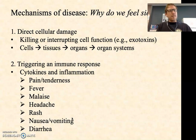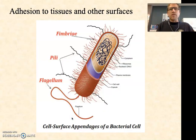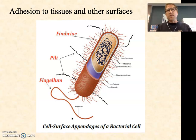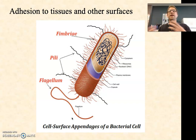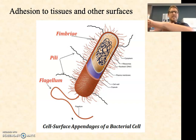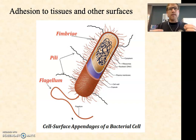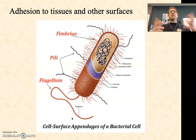Let's think about what happens when a microbe gets into the human body and establishes an infection — what actually allows it to cause that infection. One of the first things any microorganism needs to do is adhere to the specific tissues it's capable of infecting. We call this specific adhesion, and it can be mediated by a variety of things we generically call adhesins — molecules, structures, and virulence factors that allow for adhesion.